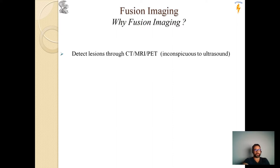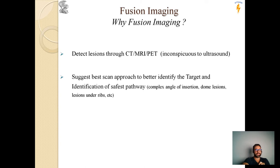We can detect lesions through CT, MRI, or PET that are inconspicuous to ultrasound. Fusion imaging suggests the best scan approach to better identify the target and identification of a safe pathway. It handles complex angles of insertion, dome lesions, and lesions under ribs that provoke acoustic shadows in ultrasound.